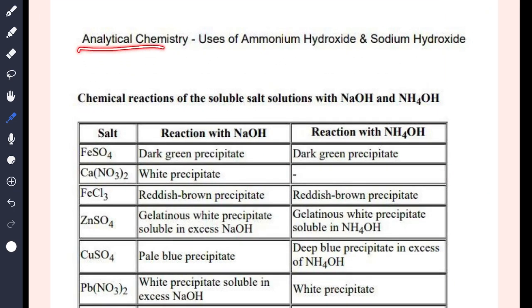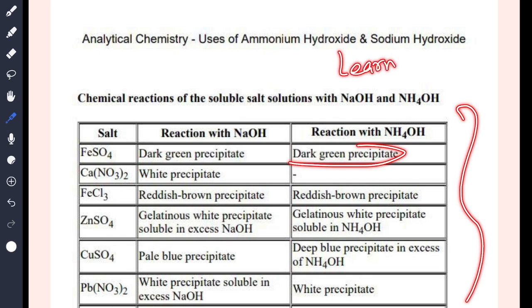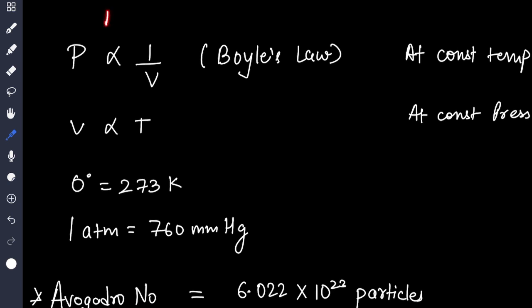So you can see here analytical chemistry, uses of ammonium hydroxide and sodium hydroxide. The salt given here is FeSO4. When it reacts with NaOH the color is dark green precipitate. Again it is dark green. Learn this table and also learn when excess ammonium hydroxide is added.